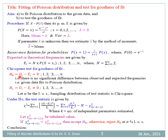The null hypothesis H₀ is O_i − E_i = 0, meaning there is no significant difference between observed and expected frequencies. The alternative hypothesis H₁ is O_i − E_i ≠ 0. The test statistic is chi-square = Σ(O_i²/E_i) − N, which follows chi-square with N − K − 1 degrees of freedom. If the calculated chi-square is less than the table chi-square, accept H₀; otherwise reject it at the 5% level of significance.